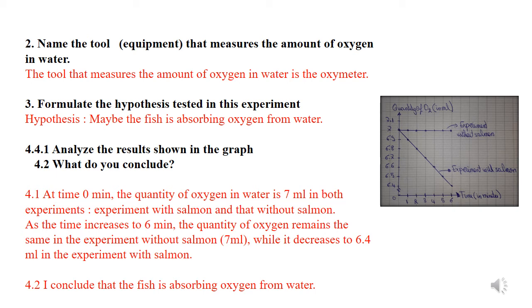Number four, analyze the results shown in the graph. What do you conclude? The two curves start at time zero. So, at time zero minute, the quantity of oxygen in water is seven ml in both experiments, experiment with salmon and the experiment without salmon. As the time increases to six minutes, the quantity of oxygen remains the same in the experiment without salmon, seven ml, while it decreases to six point four ml in the experiment with salmon. Do not forget the units and the values.